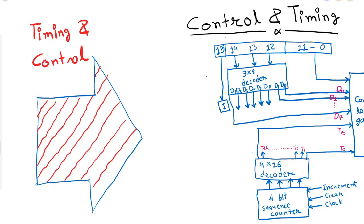In the previous lecture, we discussed various types of instructions and at the end of that video, we discussed what is completeness of an instruction set — how we can determine whether the instruction set is complete or not. For that, we also specified four criteria.